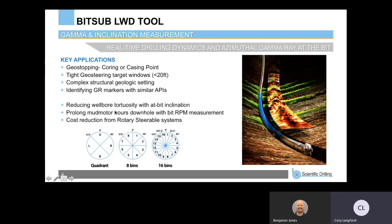We can also prolong mud motor hours downhole by actively monitoring the bit RPM and stick-slip measurement to make sure we're not putting the mud motor through any undue stress. In the past, we've looked at rotary steerable systems for tight geosteering target windows just to reduce the bit-to-sensor distance. With this at-bit sub with inclination and gamma, we may actually not need to run a rotary steerable system just for these tight geosteering target windows.